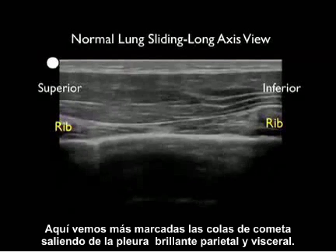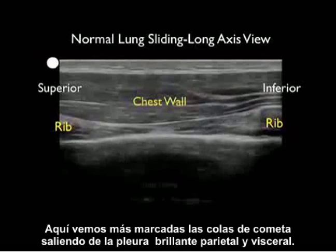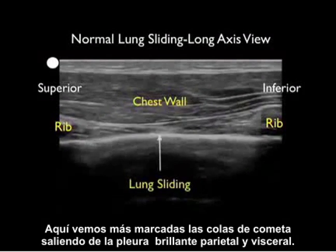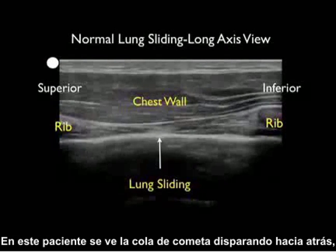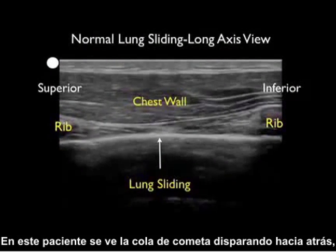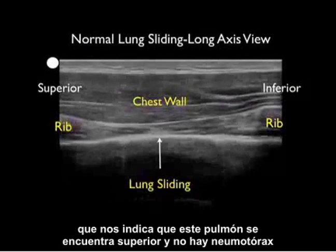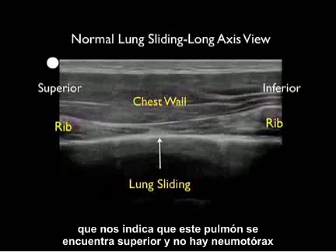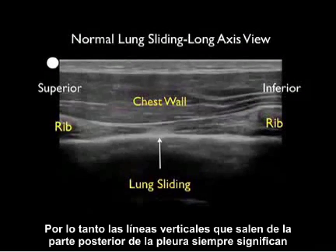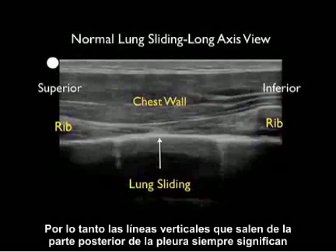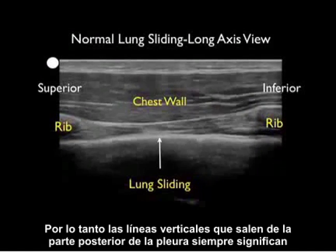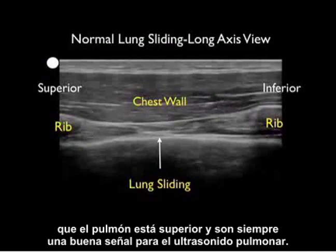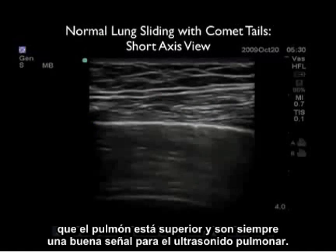Here we see more dramatic comet tails coming off the shimmering parietal and visceral pleura. The comet tail shoots off the back, telling us that this lung is up and there's no pneumothorax. Vertical lines coming off the back of the pleura always mean that the lung is up and are always a good sign on lung ultrasonography.